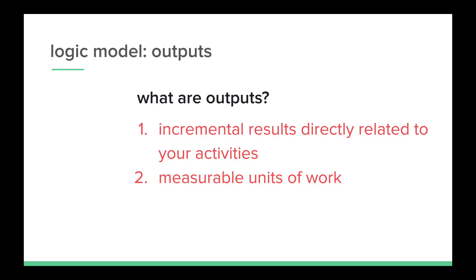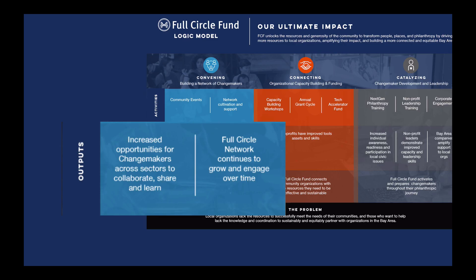The second part we're going to focus on in this step are outputs. Outputs are incremental results directly related to your activities, and most frequently they are measurable units of results — something you might report to your board or your boss. For Full Circle Fund, the community events have outputs of increased opportunities for changemakers across sectors to collaborate, share, and learn. The network cultivation and support activity has an output of the Full Circle Network continuing to grow and engage over time. Additional examples include membership growth for both nonprofit and for-profit sectors, and event attendees.